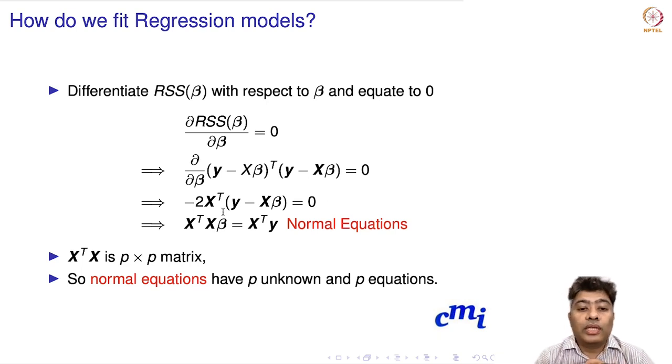We can write this as X transpose X beta equals X transpose Y. This set of equations is called normal equations. X transpose X is a p cross p matrix, so the normal equations have p unknowns and p equations.